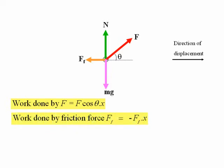The work done by the friction force F subscript F is equal to minus FF times X. It's negative this time because it is in the opposite direction to the direction of the displacement.